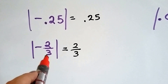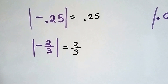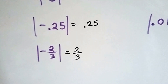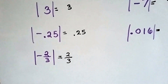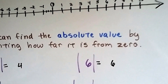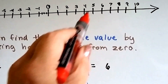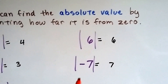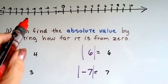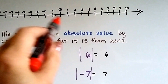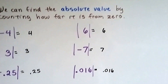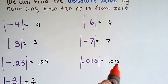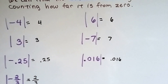Negative two thirds: the absolute value of negative two thirds would just be two thirds. We take away that negative sign — it's two thirds away from zero. Six: the absolute value of six — it's six hops away from zero, so the absolute value of six is six. Seven: the absolute value of seven — how far is seven away from zero? It's seven. Point zero one six is point zero one six away from zero, so that's its absolute value.